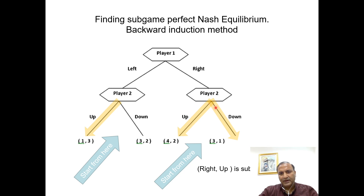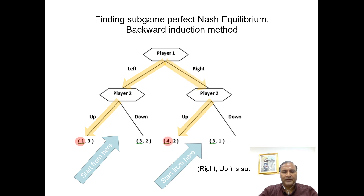On the right side, player two again has the option to choose up or down. If he plays up he gets two; if he plays down he gets one. Clearly, up is better for player two so the optimal decision on the right side is also up. Now we go to player one. Player one has the option to play left or right. If he plays left then player two will choose up and player one's payoff will be four.